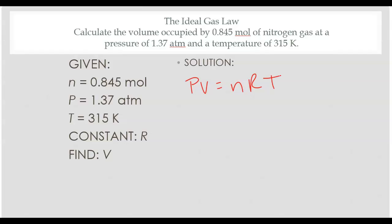And we'll write down our givens. And so we're given everything except for volume and so volume will be equal to moles times the constant times temperature divided by pressure.